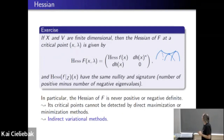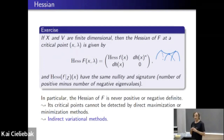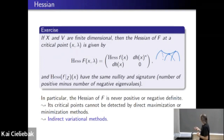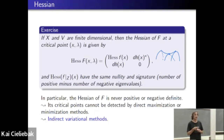Now let's look at the second derivative — the Hessian. How are the Hessians of f and capital F related? The Hessian of capital F is the Hessian of little f plus two off-diagonal terms coming from the differential of the constraint function h. From that form of the matrix, you can see that the Hessian of capital F has the same signature as the Hessian of f restricted to the constraint. In particular, the Hessian of capital F is never positive or negative definite.